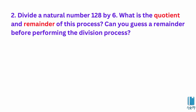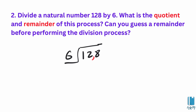If you want to divide a natural number by 6, let's start with the quotient and remainder of this process. You can determine the remainder before performing the division process. If you want to divide a number by 6, let's start with the quotient.